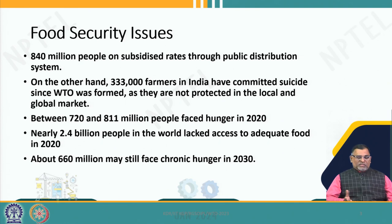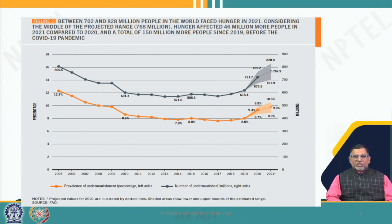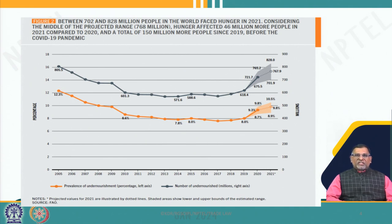There are a substantial number of people still within the ambit of this hunger index. If you see the data from 2005 onwards, the number of people affected was going down, but suddenly it increased from 2019 — definitely an effect of the pandemic — and the projected numbers after 2021 are also going up. It is now around 828 million people in 2021 are affected by hunger in the world.